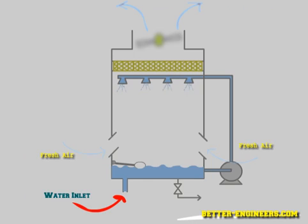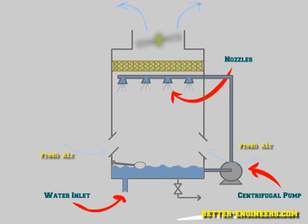In the case of our calculator, the inlet is placed at the bottom. This water is continuously recirculated using a centrifugal pump, which moves the water through nozzles in order to increase the surface area available for heat transfer.